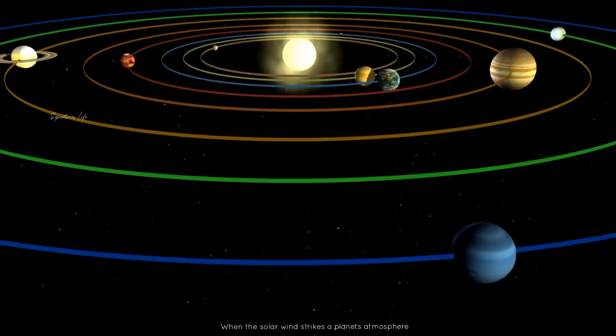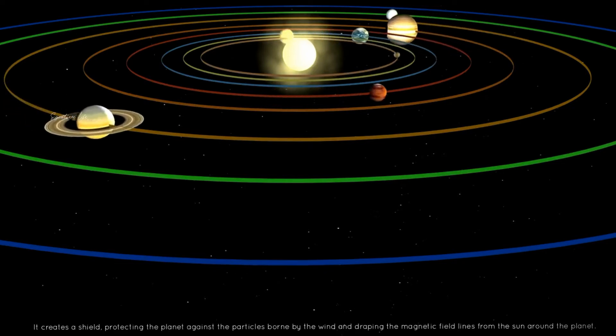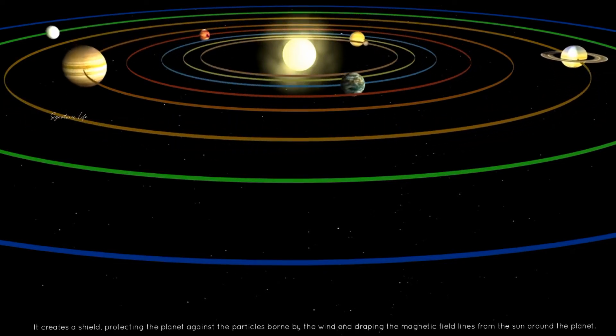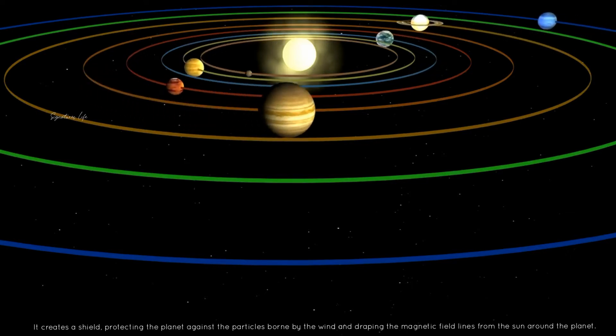When the solar wind strikes a planet's atmosphere, it creates a shield, protecting the planet against the particles borne by the wind and draping the magnetic field lines from the sun around the planet.